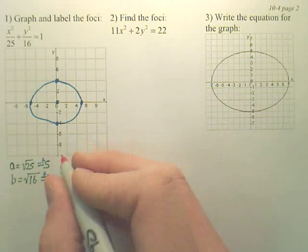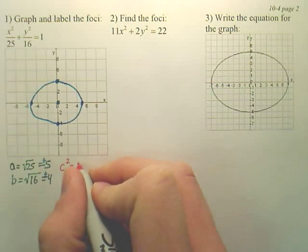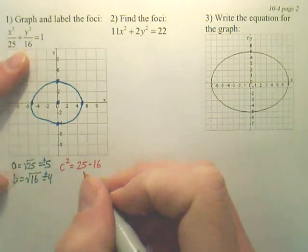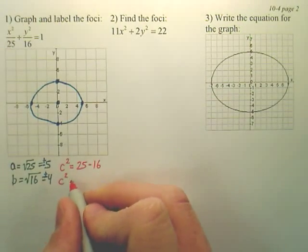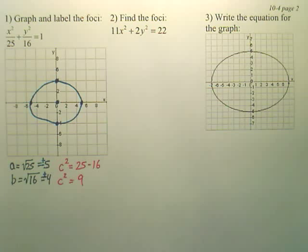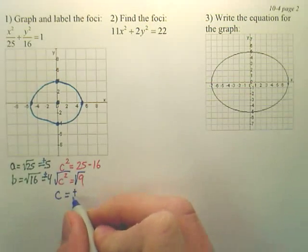Then you've got to find your focal points, and if you remember from your notes, it's c squared is equal to a squared, which is 25, minus b squared, which is 16. So that looks like c squared is 9. So when you square root both sides, you get c is equal to plus or minus 3.